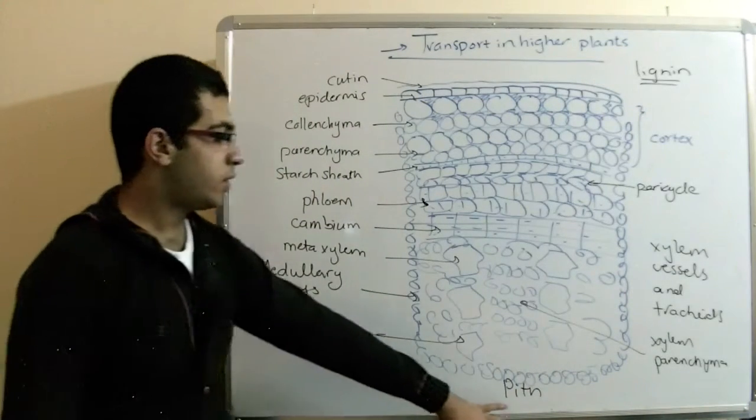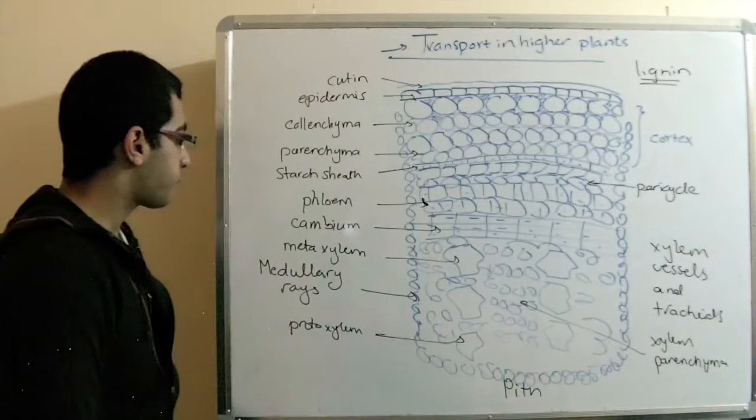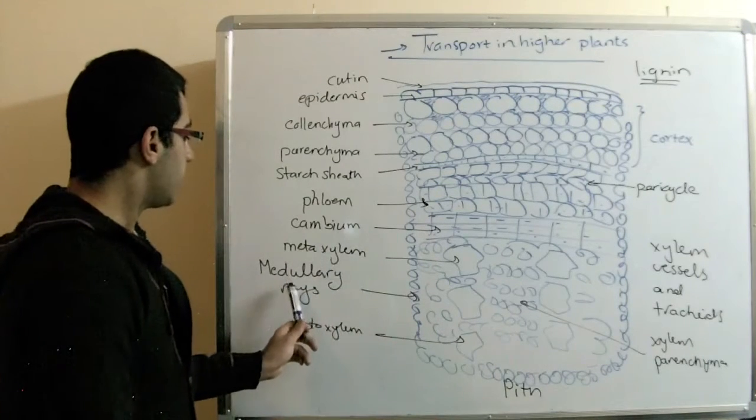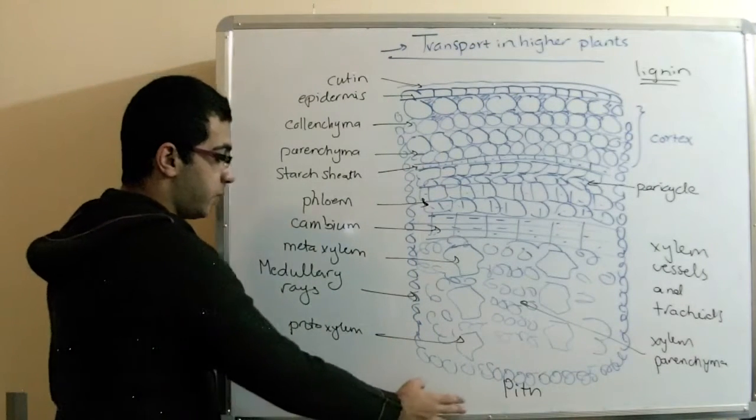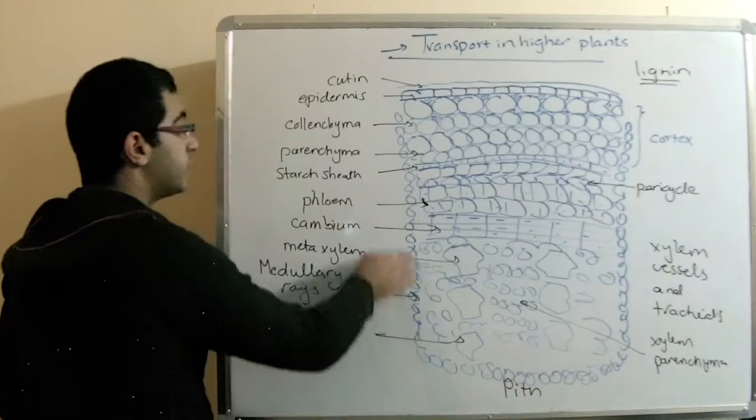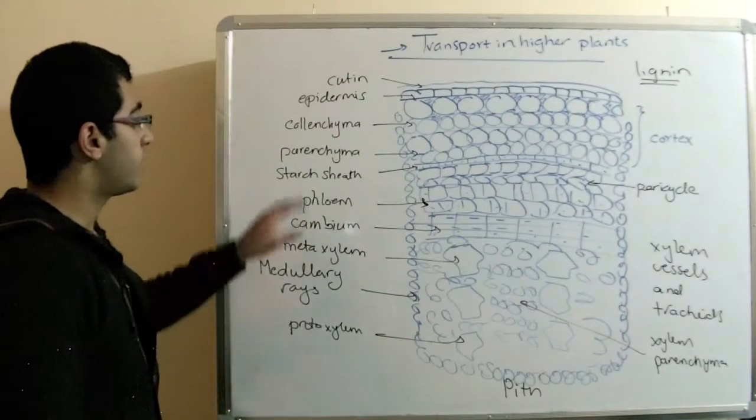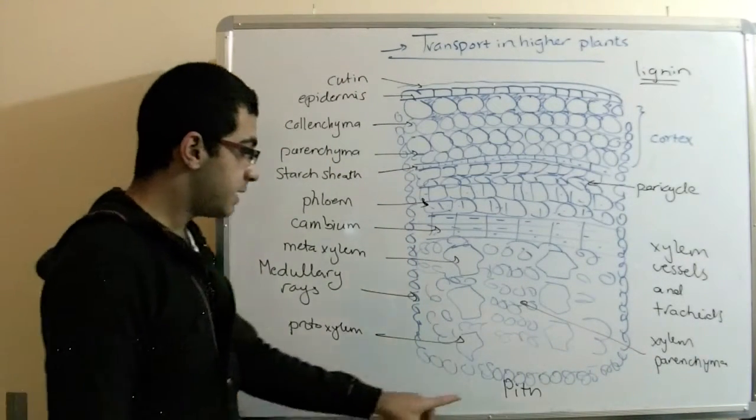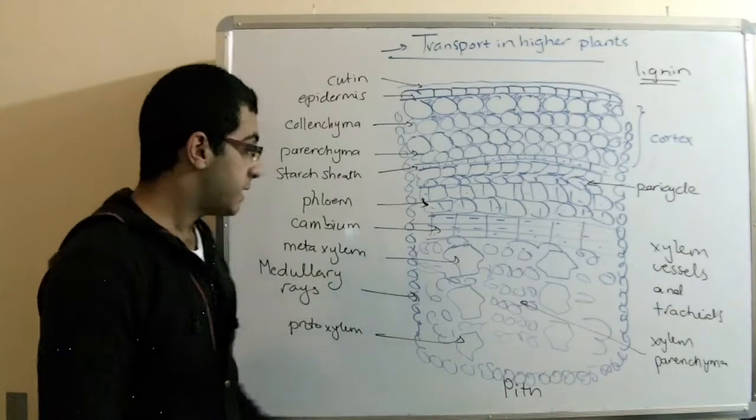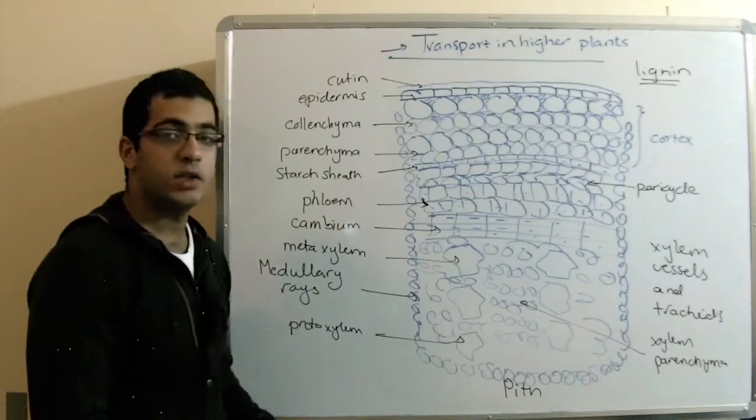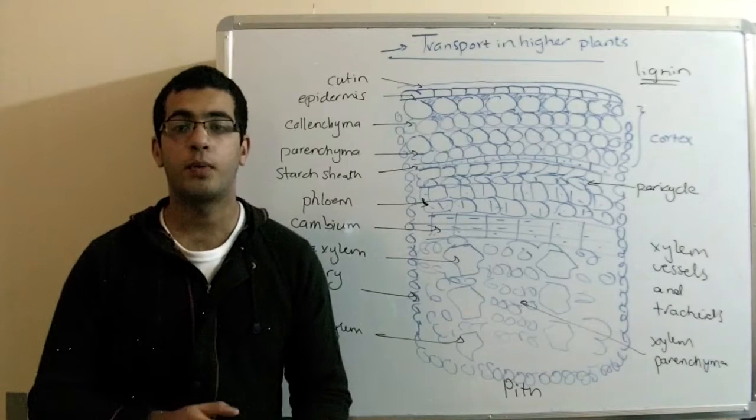You know, the inner part of the stem, the center of the stem. So, the medullary rays helps in the connection between the pith tissues and the cortex tissues of the plant. And by the way, the pith is also formed of parenchyma cells for the purpose of storage.